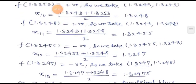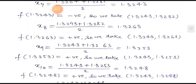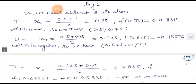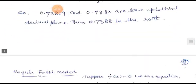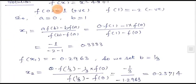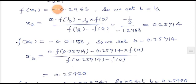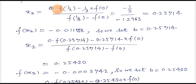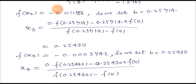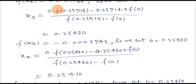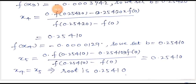Treating x₂ = 0.2571 as the new value, we compute x₃ by the same formula. Putting this value into the formula gives x₃ = 0.25402. Since f(x₃) is negative, we set B = 0.25420. Similarly, computing x₄ by putting all values into the formula gives x₄ = 0.25410.